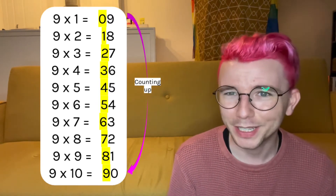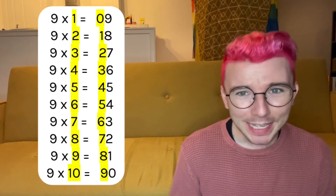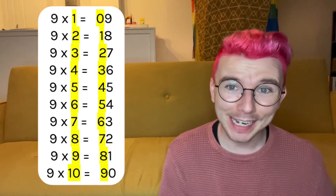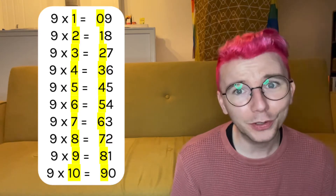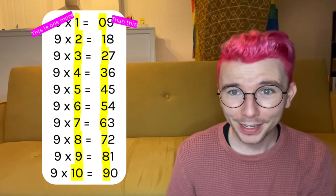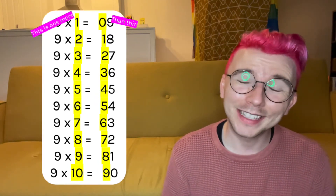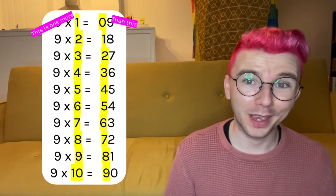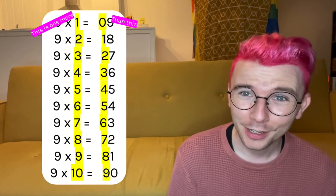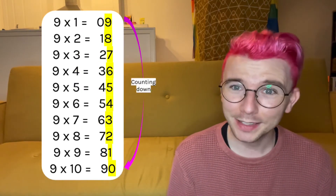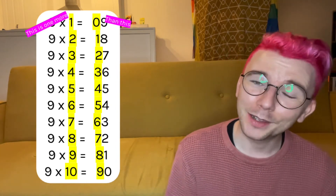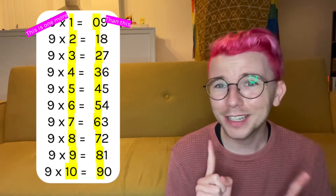Are there any other patterns that we can notice? Let me highlight these two columns — the number that we're multiplying by nine and the tens column of the answer. Can we see any sort of relationship between those numbers? The relationship I see is the number that we're multiplying by is one more than the tens column answer. So if we're multiplying by four, in the tens column there'll be a three. If we're multiplying by eight, in the tens column there'll be a seven. So that's three patterns already: units counting down from nine, tens counting up from zero, and the number we're multiplying by is one more than the tens digit.